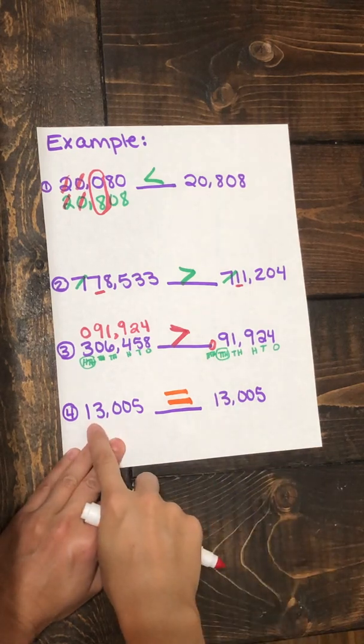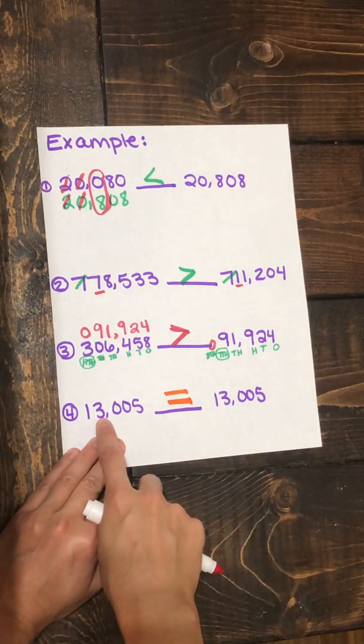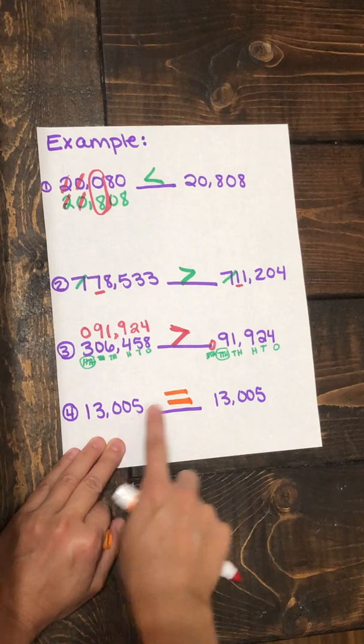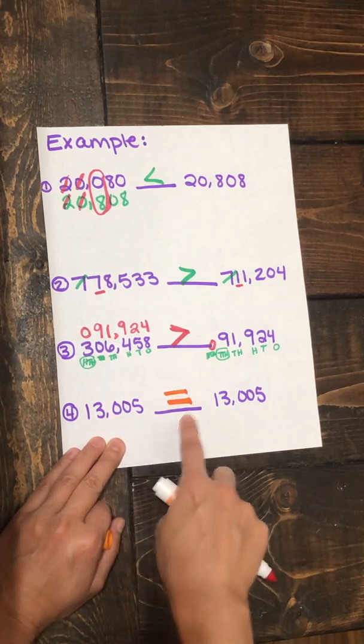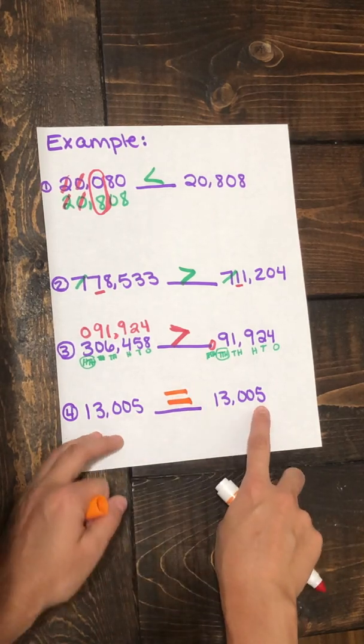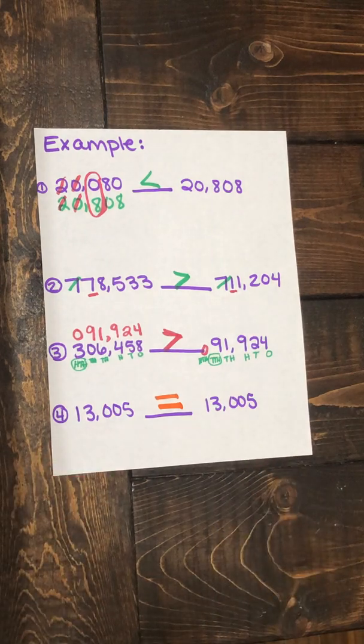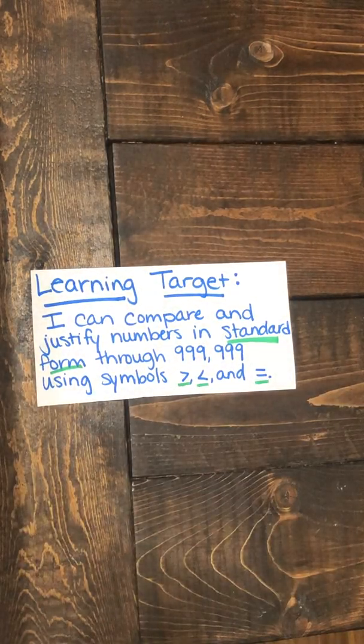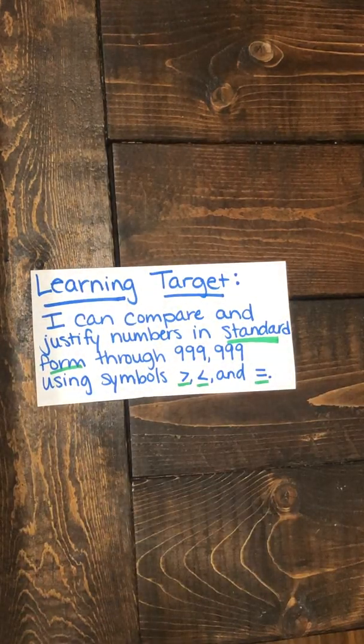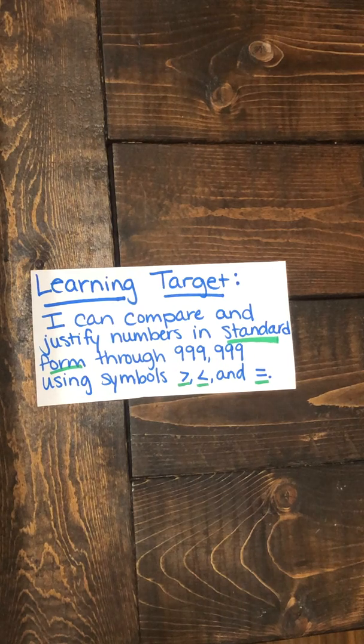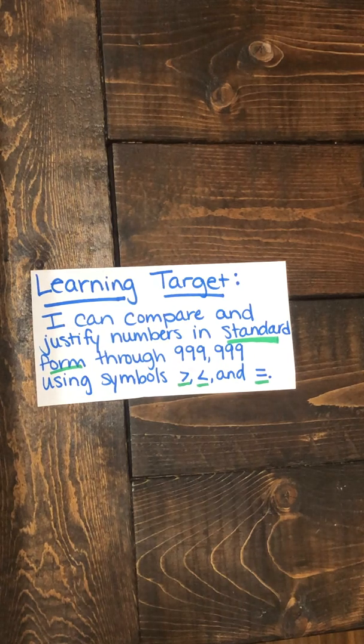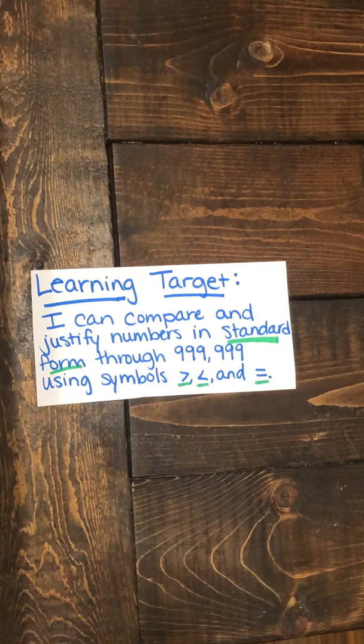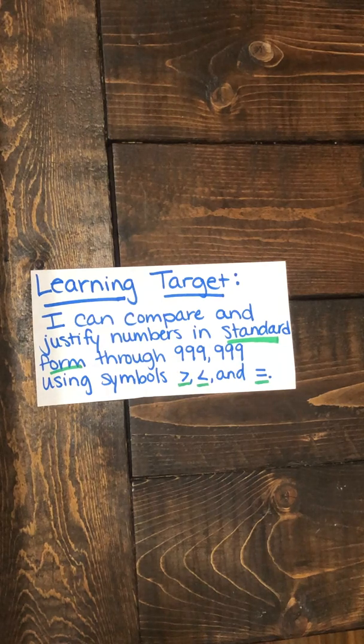So we can read our number sentence. 13,005 is equal to 13,005. So let's look back at our learning target for today. It says, I can compare and justify numbers in standard form through 999,999 using the symbols greater than, less than, and equal to.